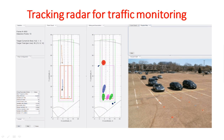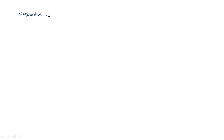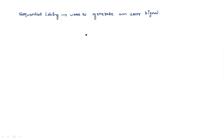Now coming to the sequential lobing concept. Sequential lobing is a method used to generate an error signal. What do we mean by an error signal, and what is the purpose of generating one? When you are using a tracking radar — which is used to identify the future position of the target — an error signal is needed.